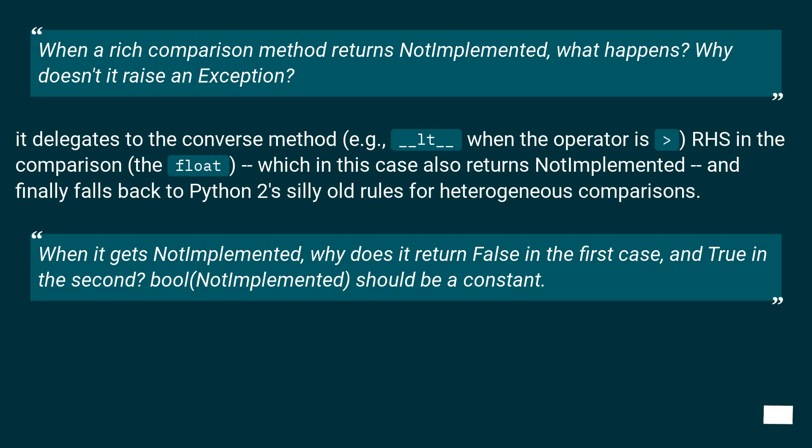When a rich comparison method returns NotImplemented, what happens? Why doesn't it raise an exception? It delegates to the converse method, for example, __lt__ when the operator is greater than. RHS in the comparison, the float, which in this case also returns NotImplemented, and finally falls back to Python 2's silly old rules for heterogeneous comparisons.